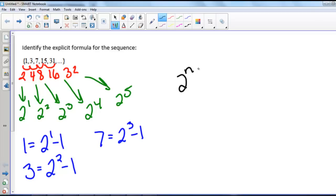So what we have here is that our explicit formula is going to be 2 to the n, so n is the term that we're on. So for the first term 1, n is 1, for our second term 3, n is 2, and we are subtracting 1. So a to the n, our term in the sequence, equals 2 to the n minus 1.